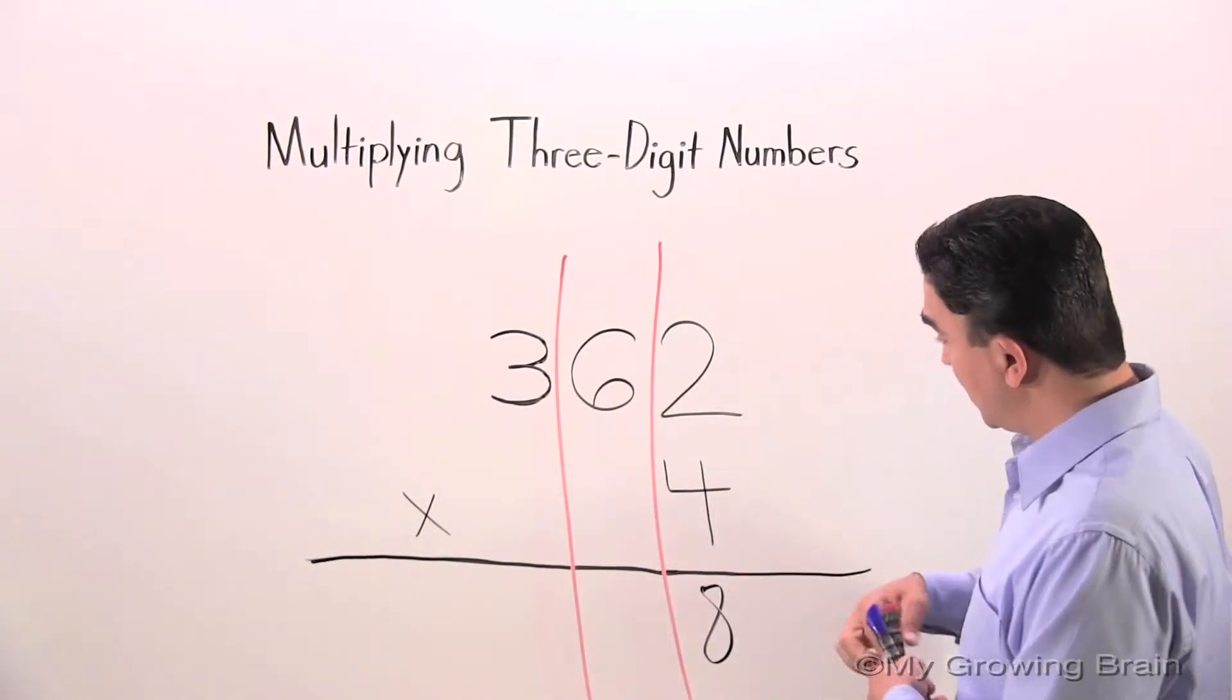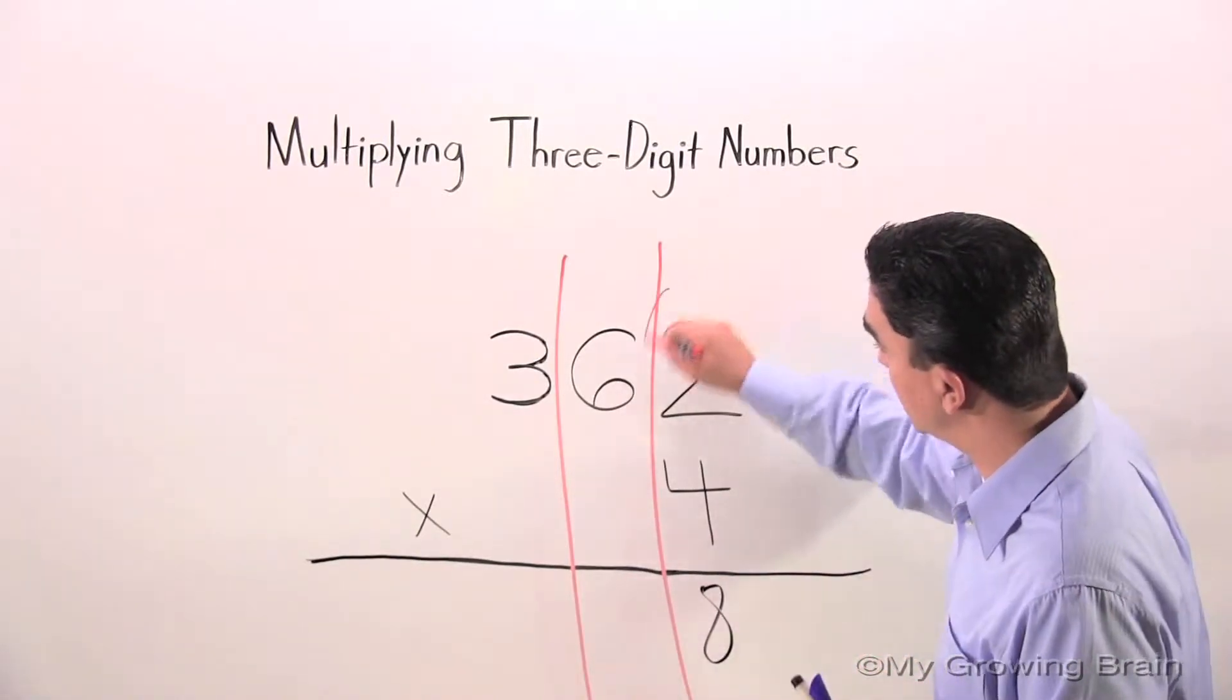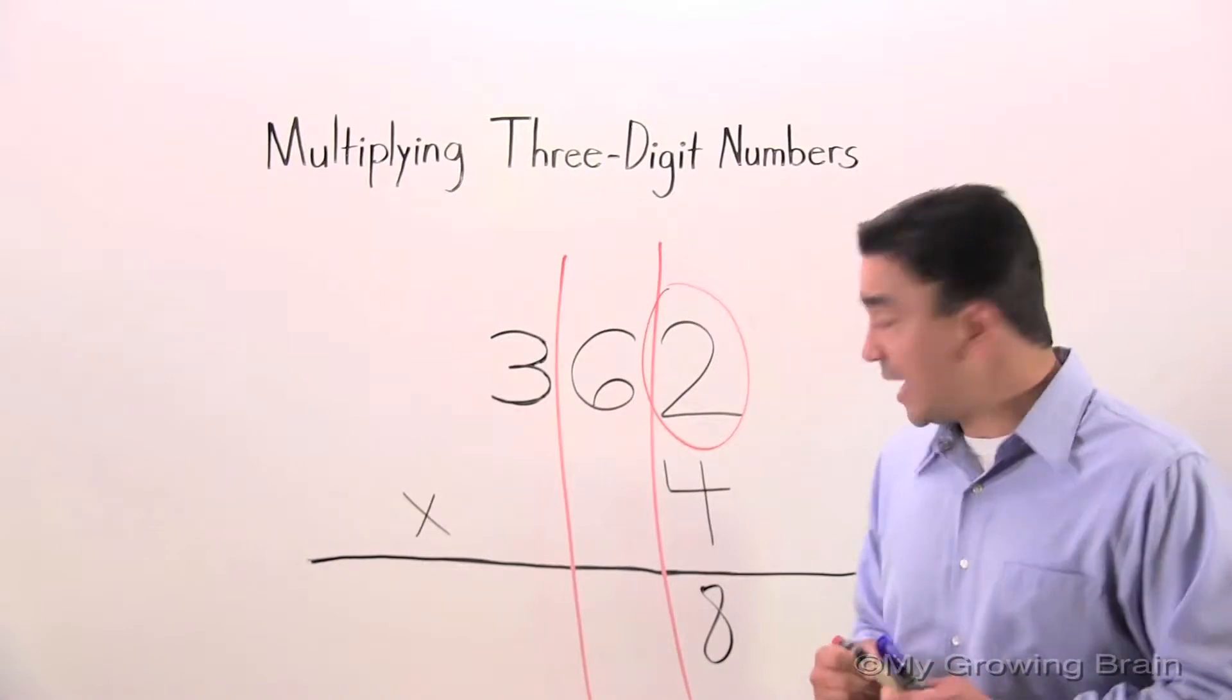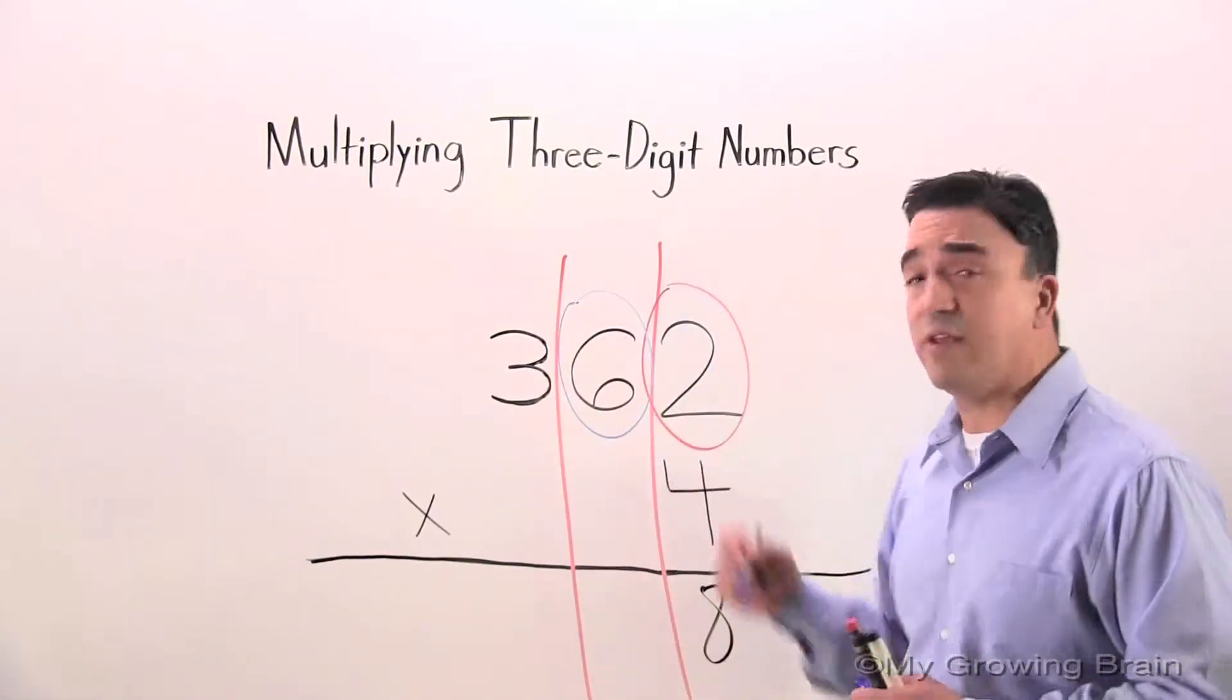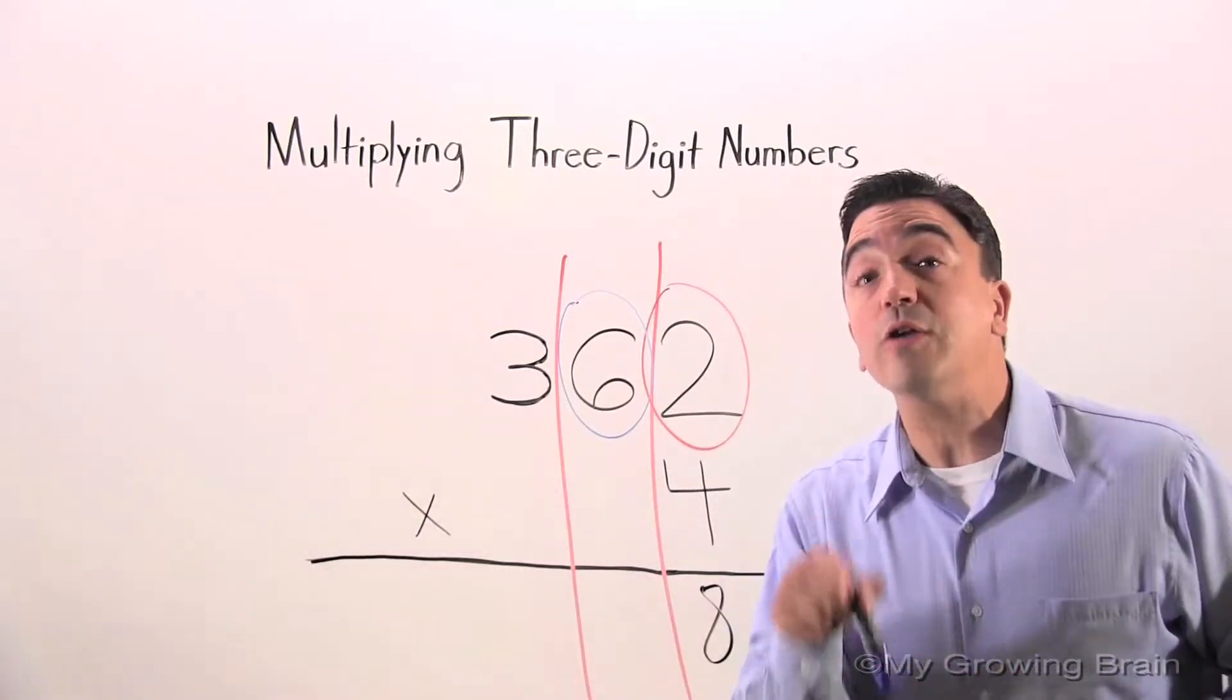So I can go from four times two, and I can move on to four times six. I'm going to put this little circle around that six just to remind you of where to go next.